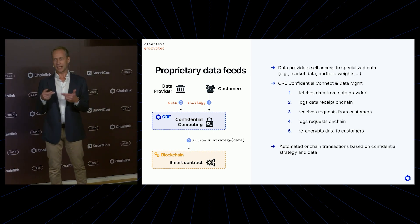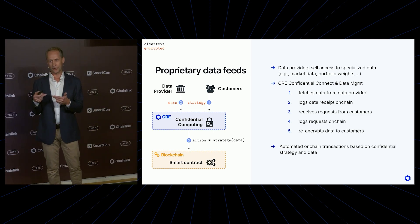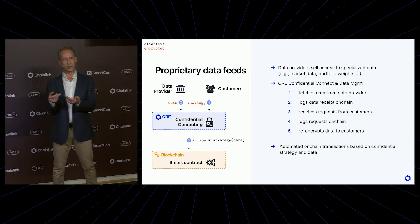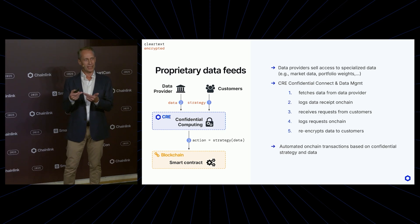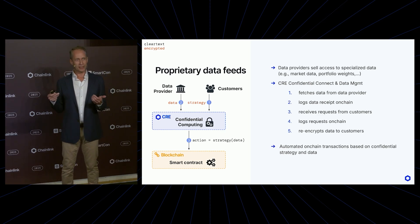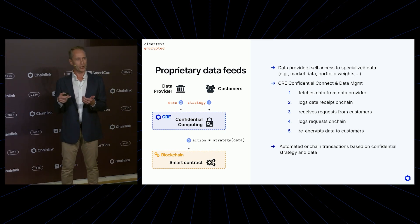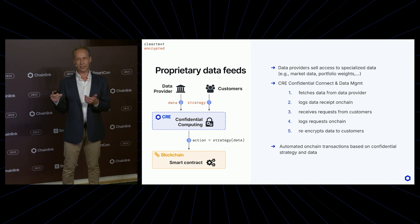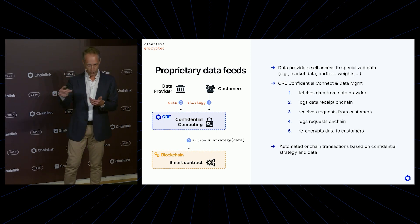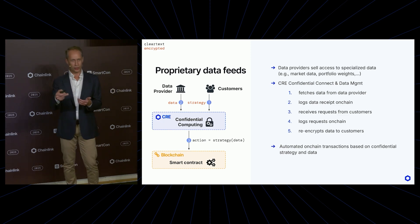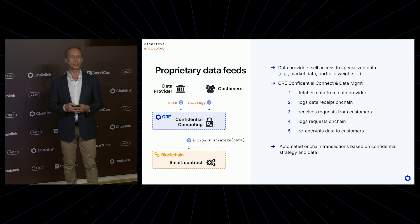So as soon as this data comes available, an enclave will be charged with the encrypted strategy and encrypted data — all decrypted inside the enclave. You apply the strategy to that data, and out comes the resulting token trades that need to be performed on chain. All that you see on chain is those token trades computed by the Chainlink Confidential Compute layer.